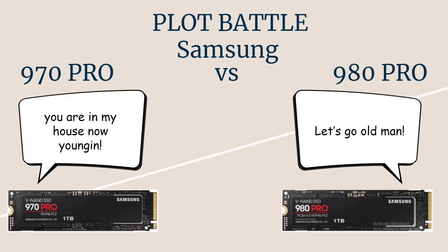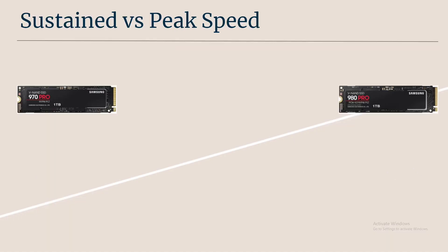When I first learned about the plotting process, the 970 Pro was the first SSD that came to my mind, because the plotting process is about sustainable speed — and that's what the 970 Pro is about. It's the older Gen 3 SSD with MLC NAND, versus the newer Gen 4 980 Pro with TLC NAND.